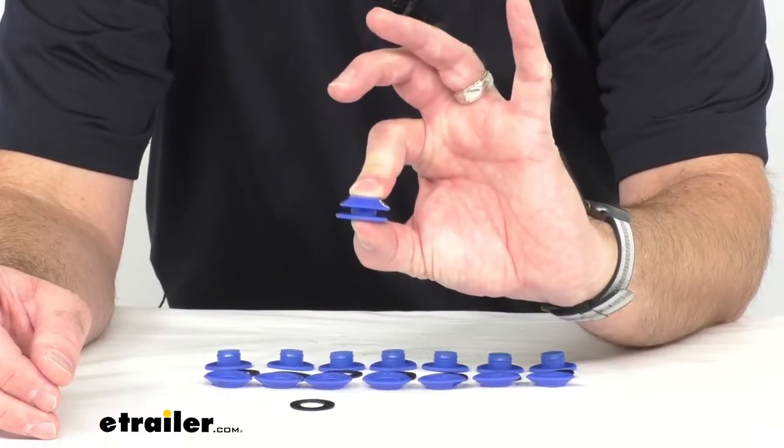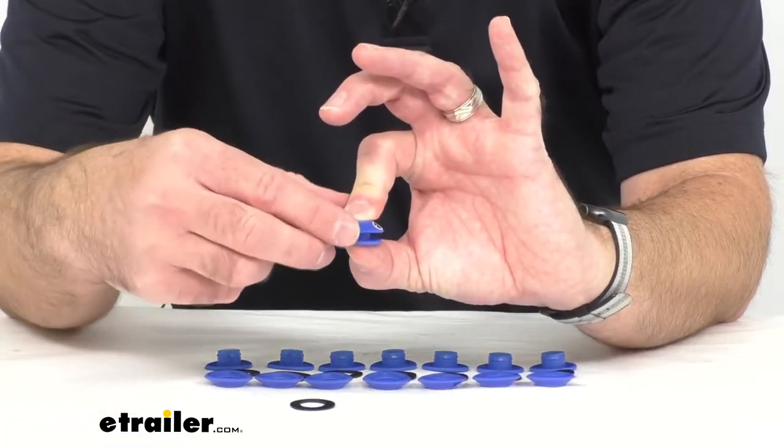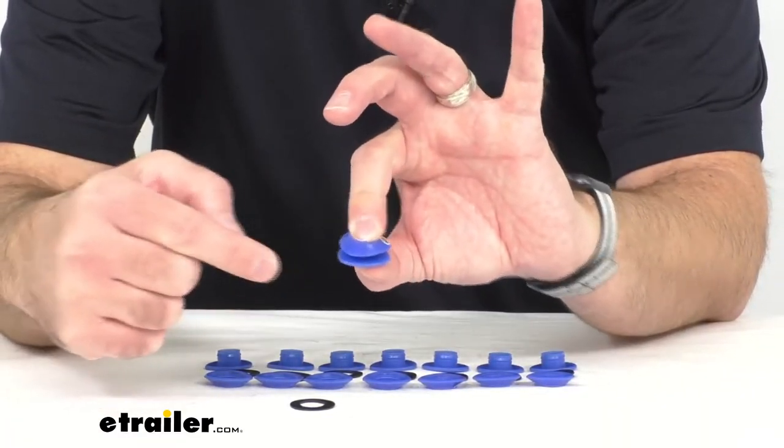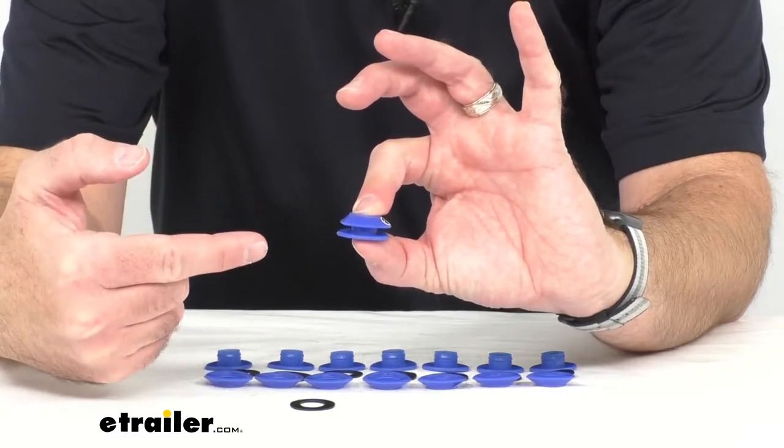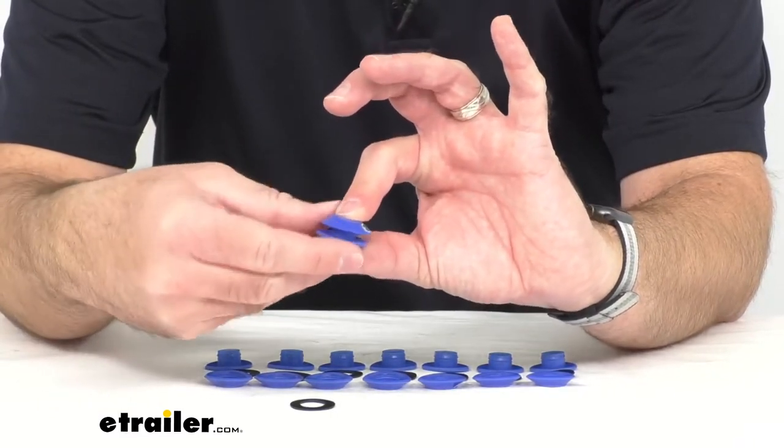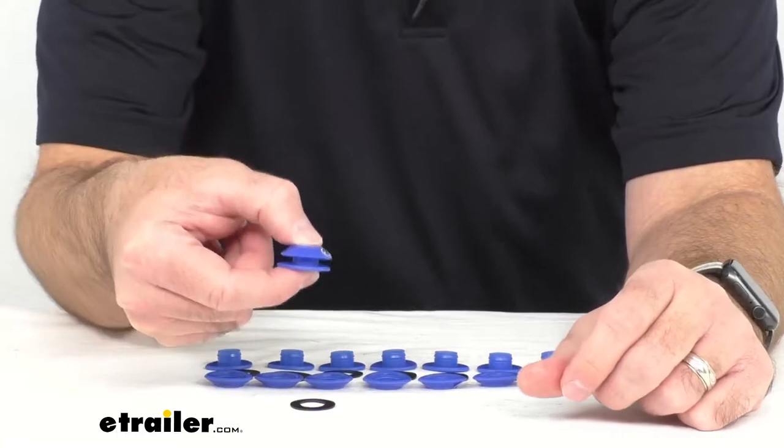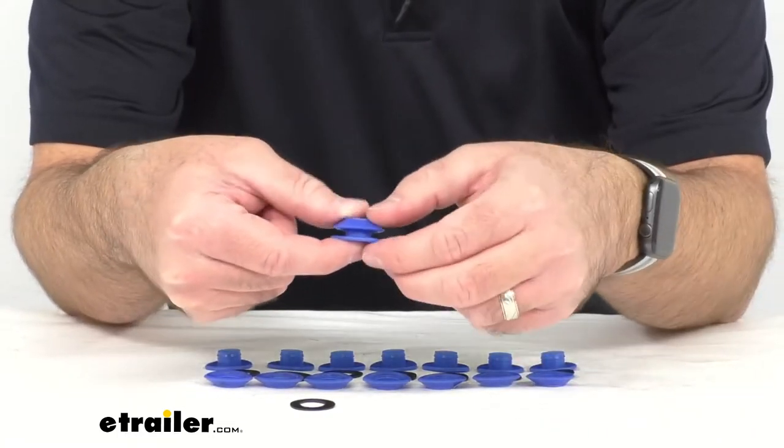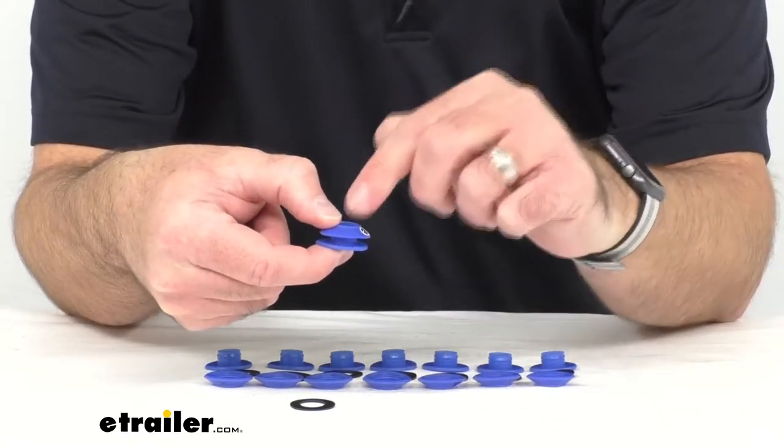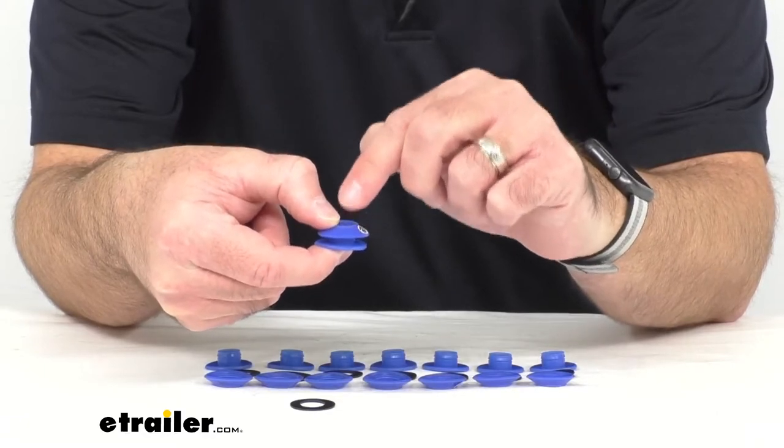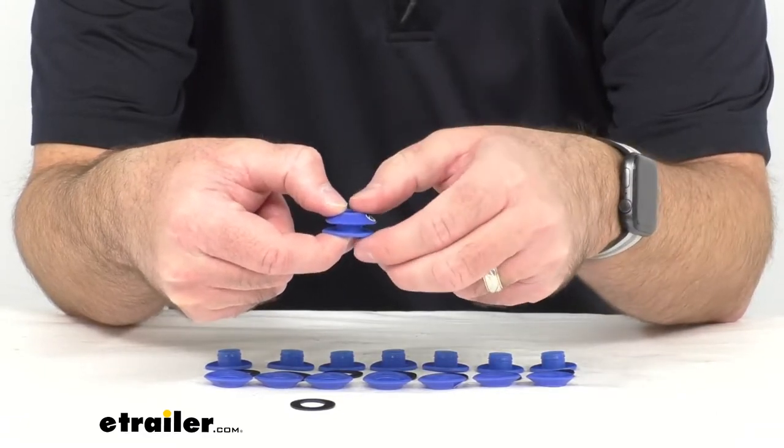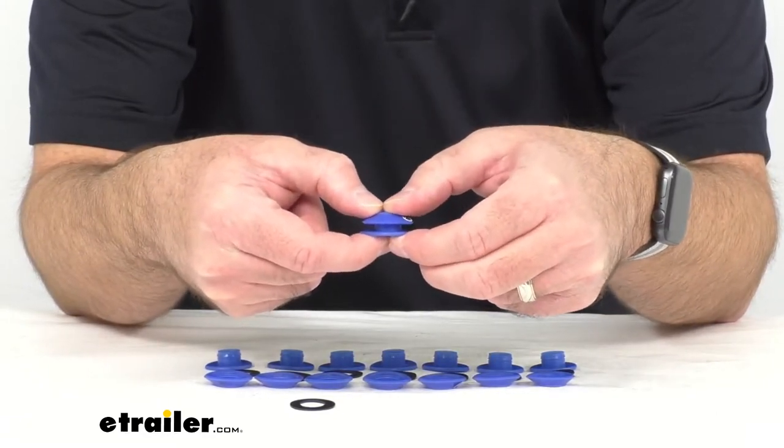And then again you would press tight and use a plastic or rubber mallet to mount this grommet. Now it is important to note that you should not use a metal hammer to mount these grommets because that metal hammer will damage them. So only use a plastic or a rubber mallet.